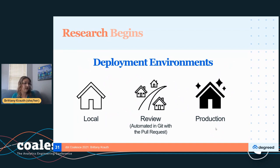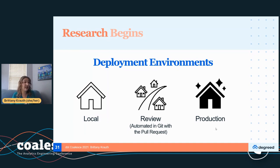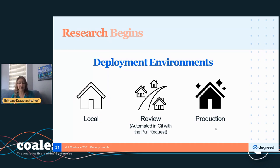One of the things that makes DBT so awesome is the deployment environments. When you're starting your research, you can dive into DBT right away and start building models in your local environment — a safe sandbox where you're not going to break a dashboard or a finished data set. We also have review environments that are automated in Git — they come with the pull requests. They allow us to do really detailed data validation on exactly what we're going to push to production.